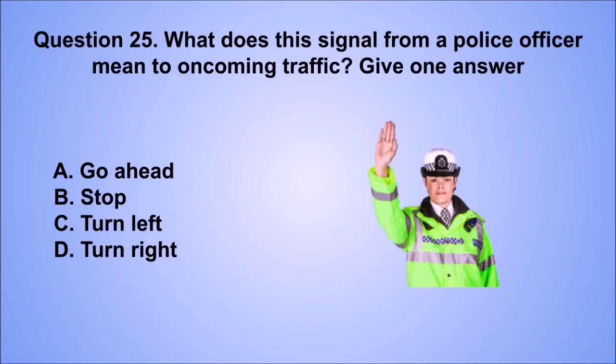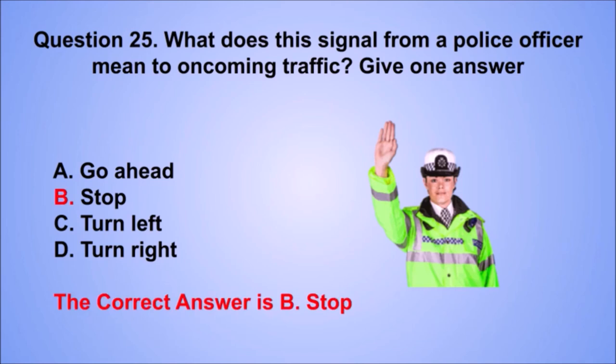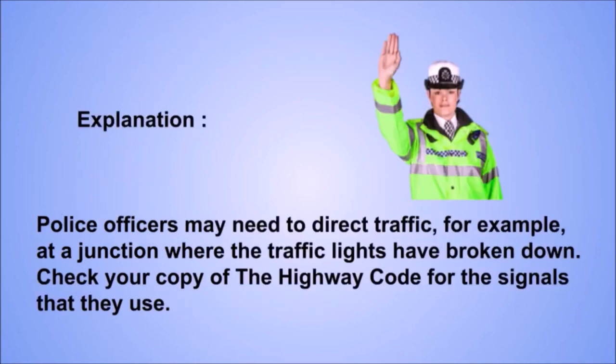Question 25. What does this signal from a police officer mean to oncoming traffic? The correct answer is B: Stop. Police officers may need to direct traffic, for example at a junction where the traffic lights have broken down. Check your copy of the Highway Code for the signals that they use.